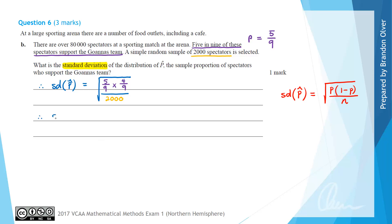The standard deviation of p-hat equals the square root of five on nine times four on nine, which is 20 on 81. Instead of dividing by 2,000, we multiply by the reciprocal, which is one over 2,000. We can cancel 20 here with 20 in the denominator, leaving behind 100.